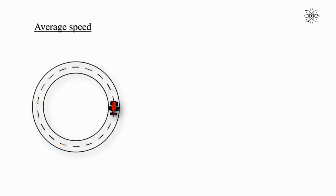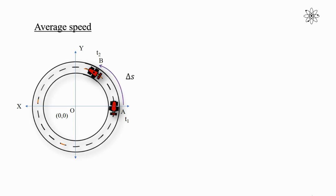Let's take an example of a car performing circular motion. To specify its position, let's consider a coordinate system in which the origin is at the center. During the motion, the car is at position A at time t1 and reaches position B at time t2. The total distance covered by the car from position A to B is delta s, covered in finite time delta t, where delta t equals t2 minus t1.